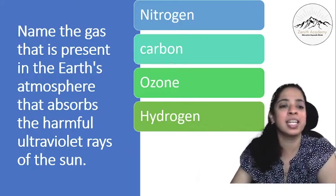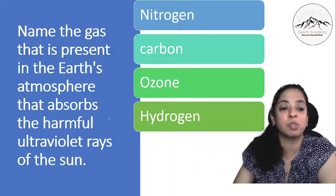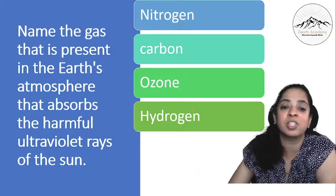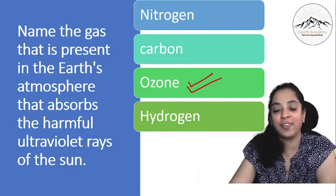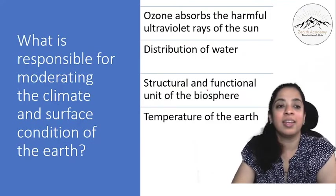Now, name the gas that is present in the earth atmosphere that absorbs the harmful ultraviolet rays of the sun. Just now we read that option. Ozone absorbs the harmful ultraviolet rays of the sun.